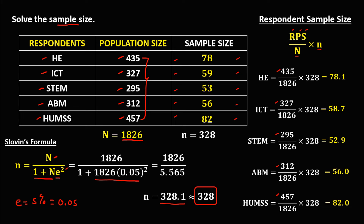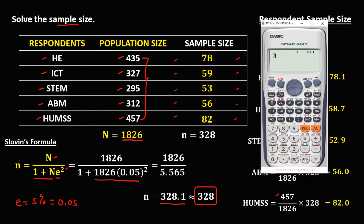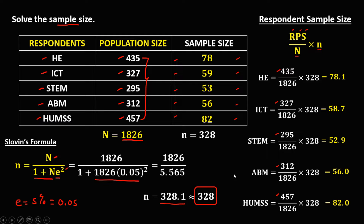If we add all the sample sizes — 78 plus 59 plus 53 plus 56 plus 82 — that equals 328, which confirms the total sample size. Thank you.